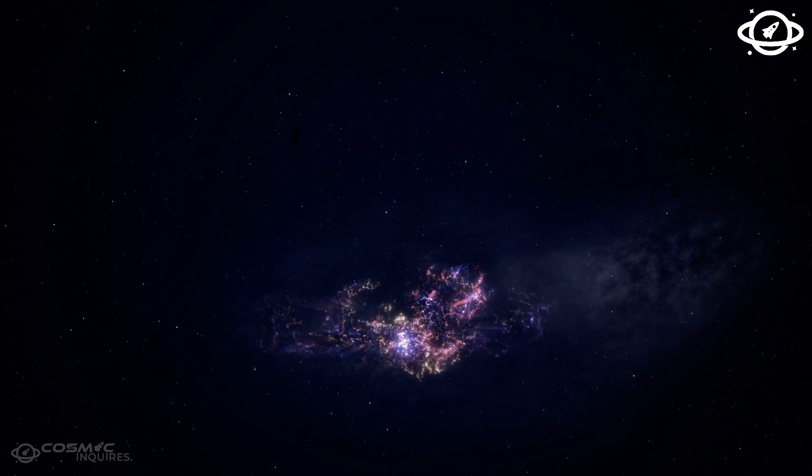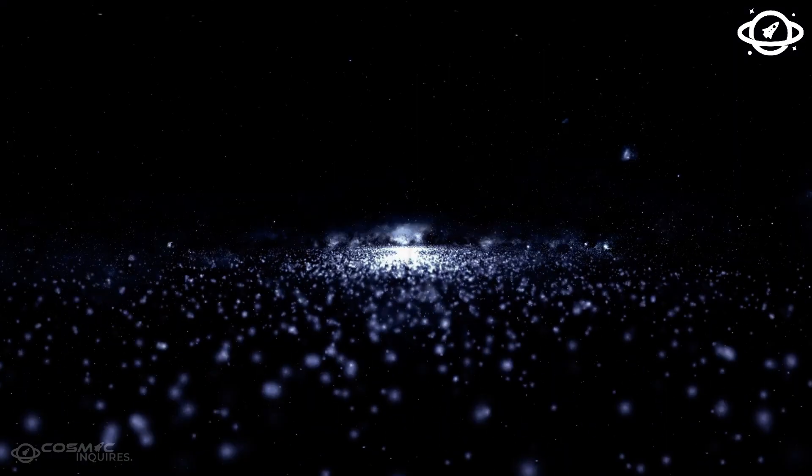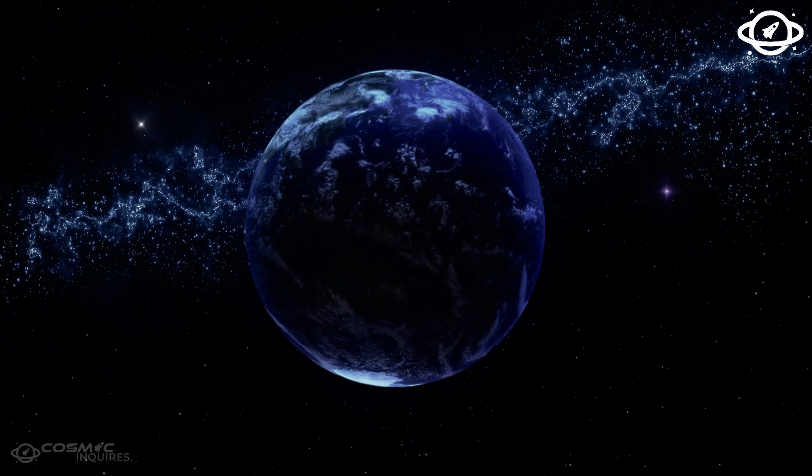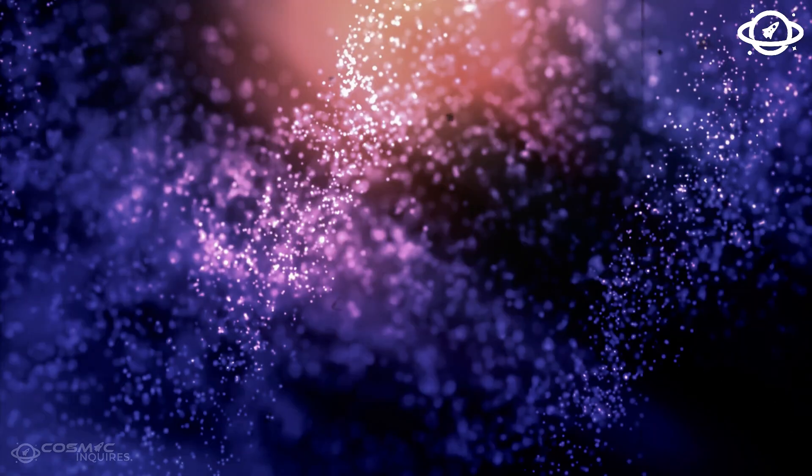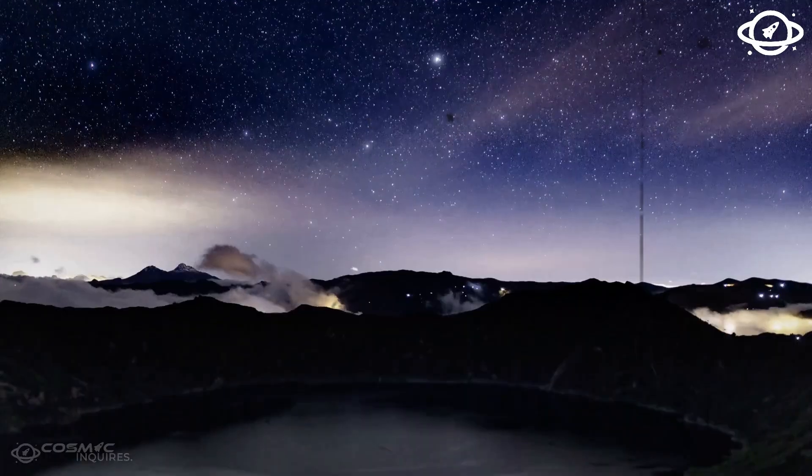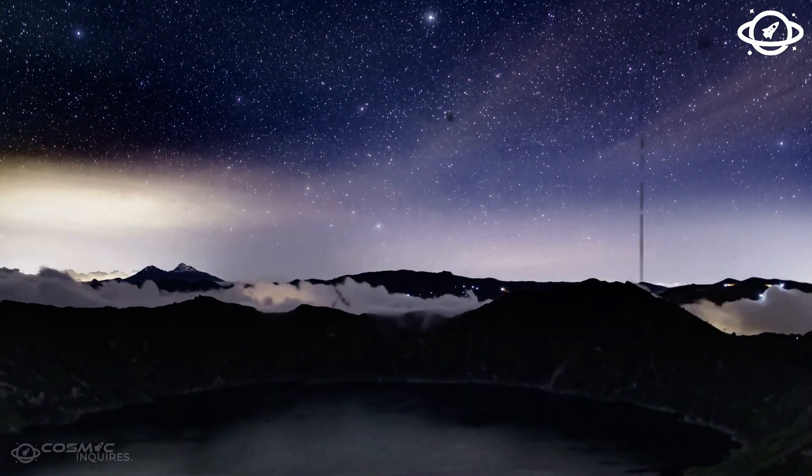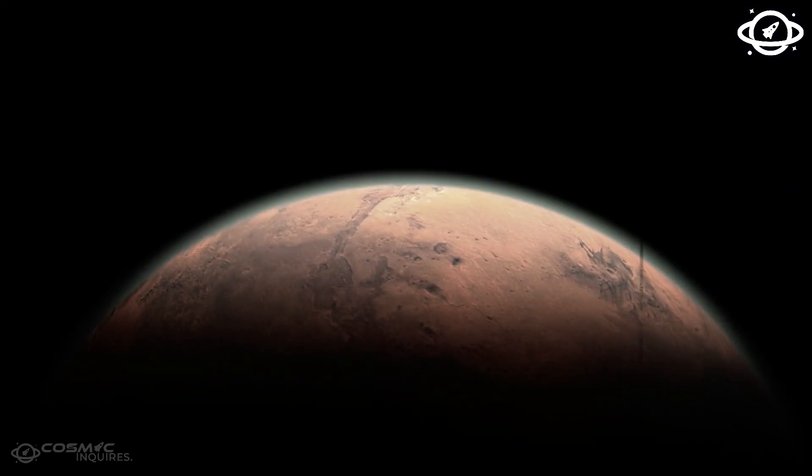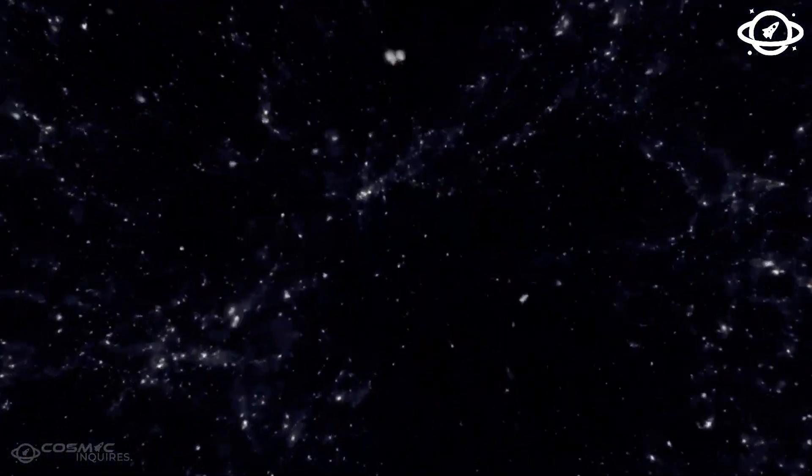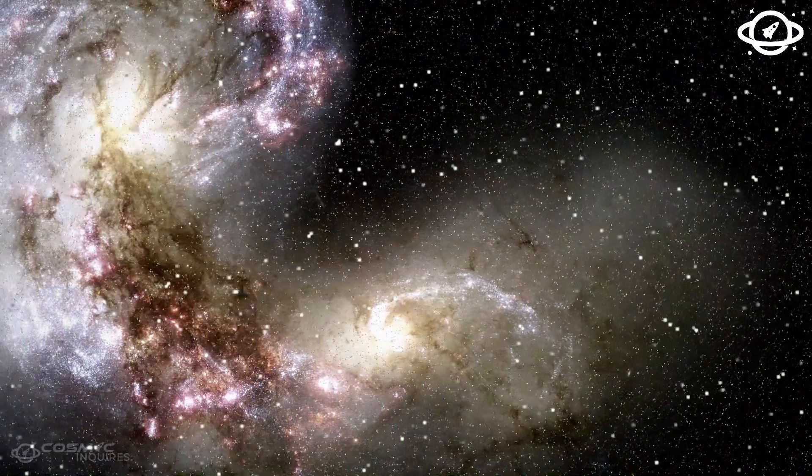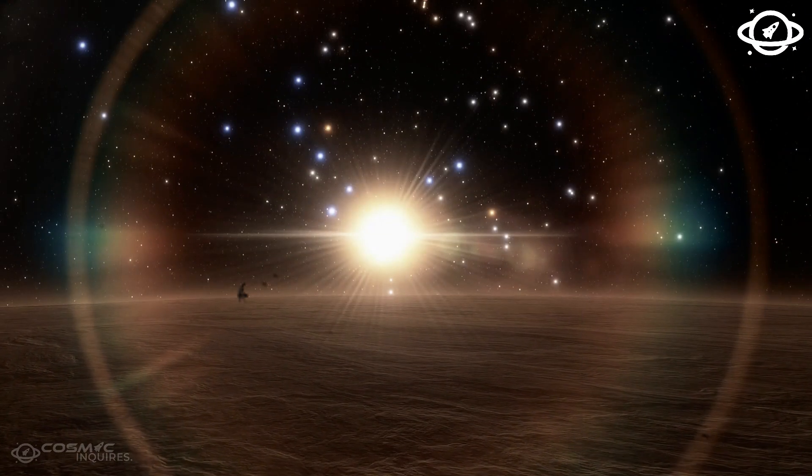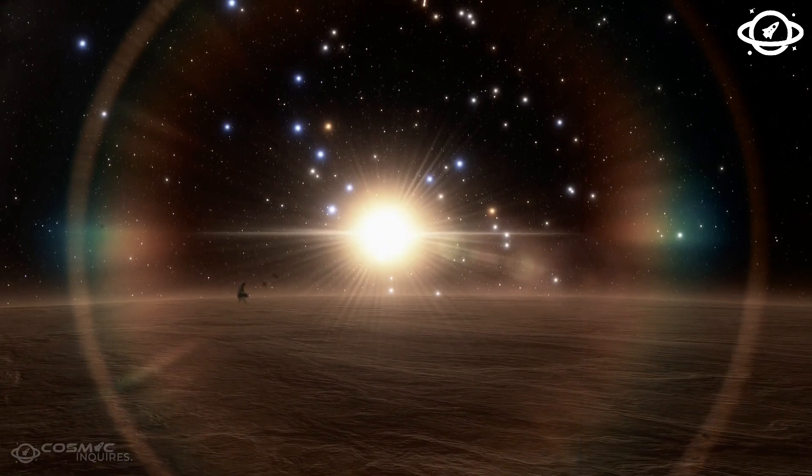The James Webb Space Telescope was built to reveal the past, to peel back the layers of time and show us what the universe looked like billions of years ago. But in doing so, it may have shown us something even deeper: that we are not just observers of the cosmos. We are part of a system far older, more precise, and more deliberate than we ever imagined. Galaxies that shouldn't exist, planets that defy gravity, signals without sources, structures that mirror intelligence. This isn't random noise. These are data points - real, measurable, undeniable - that challenge the very fabric of our understanding.